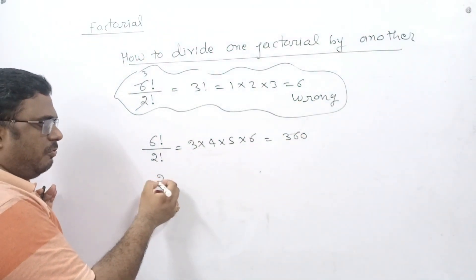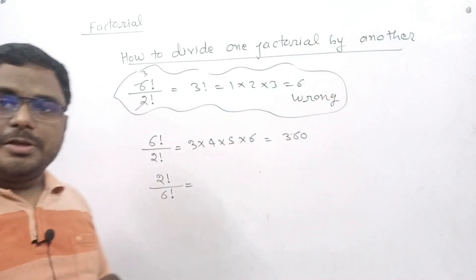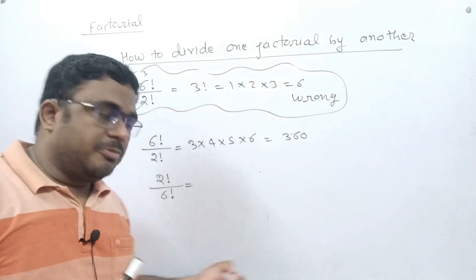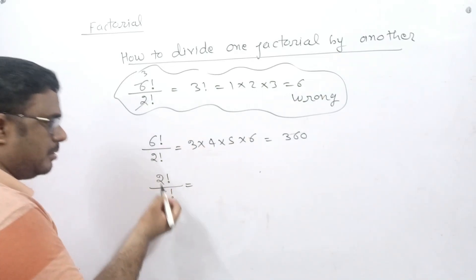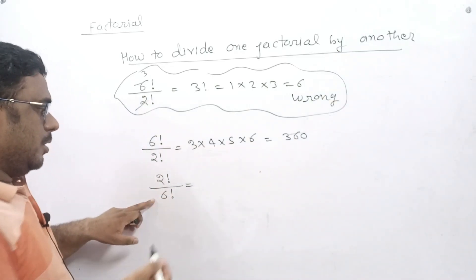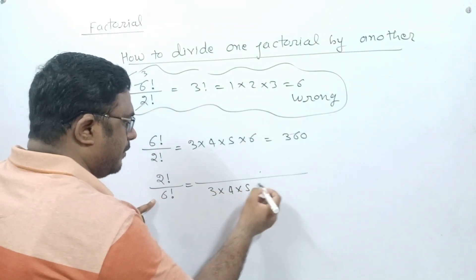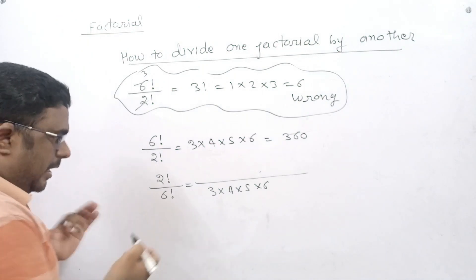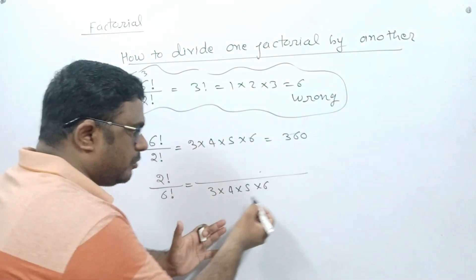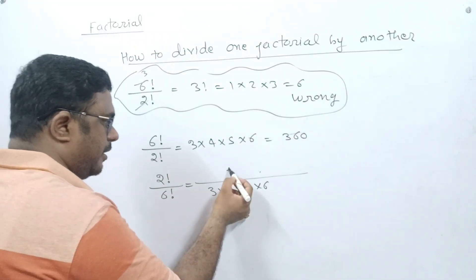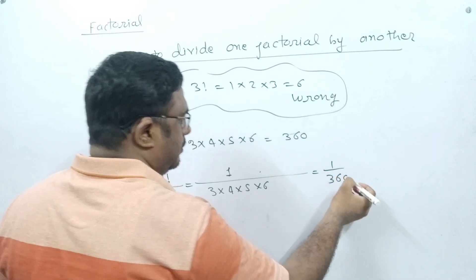Suppose 2 factorial is in the numerator and 6 factorial is in the denominator. You do the same thing: write the natural numbers just after 2 — which are 3, 4, 5, and 6 — but since the denominator is greater than the numerator, these values go in the denominator. The numerator becomes 1, giving the result 1/360.